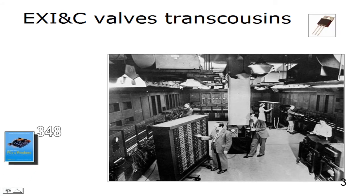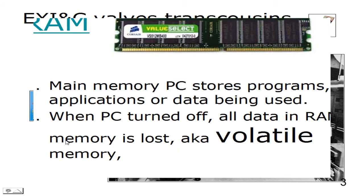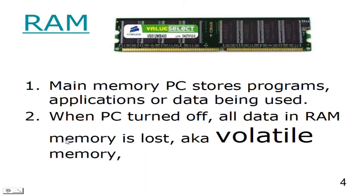ENIAC. This is the ENIAC computer. It had 18,000 valves. The valve was replaced not by the transcosm, but by the transistor. Look on page 348. The C drive is the main memory of the computer, but the temporary memory is RAM.